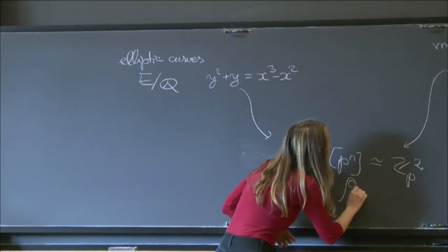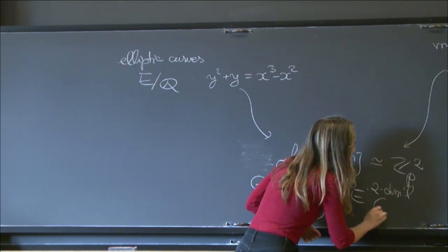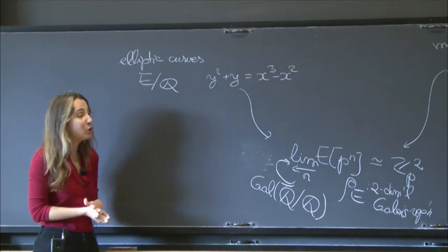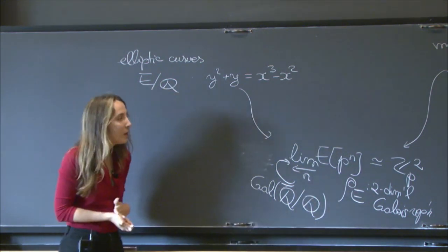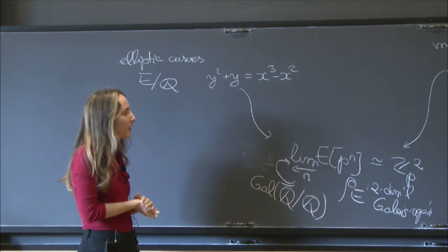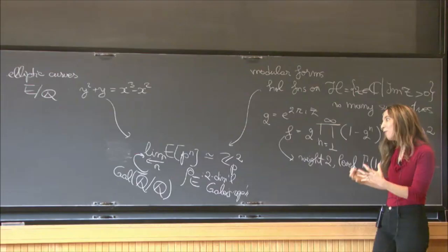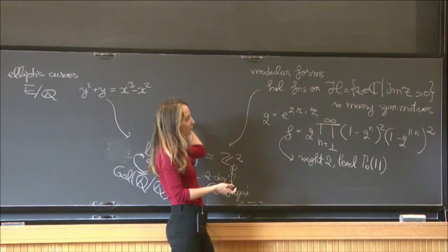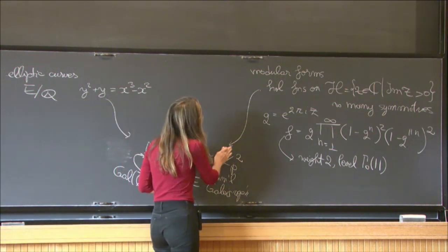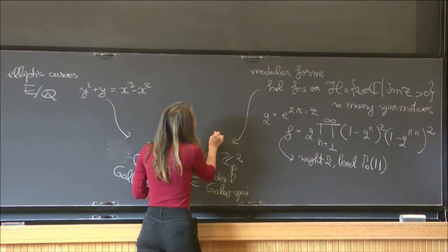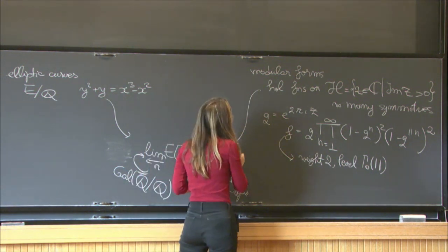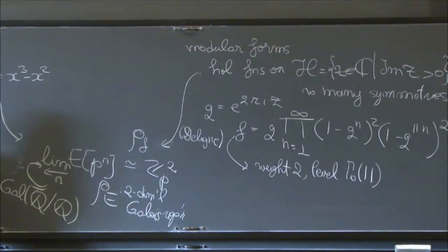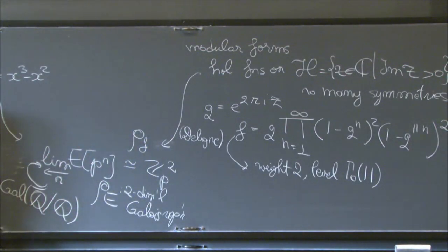The elliptic curve produces a two-dimensional Galois representation ρ_E. This is a special case of a more general machinery developed by Grothendieck called étale cohomology, which takes any algebraic variety defined over a number field and produces a Galois representation on its Betti or singular cohomology. It's also possible to take a modular form and produce a Galois representation — this was done by Deligne, through a much more complicated process.